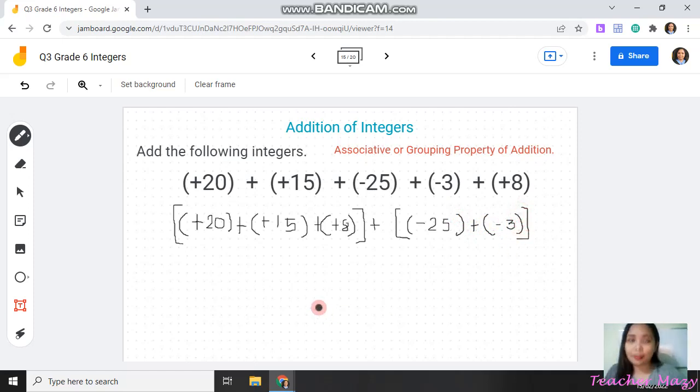Now let's add them. Addition of integers with like sign. So, 20 plus 15 plus 8. And the sum is positive 43. Since all of them are positive, so the sign of the sum is also positive.